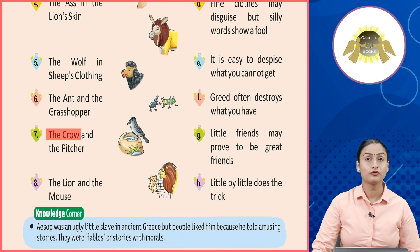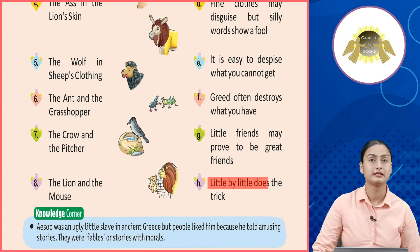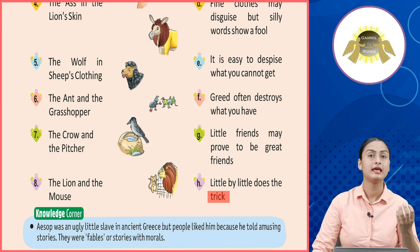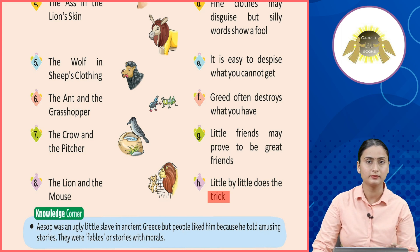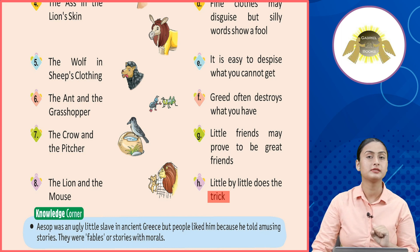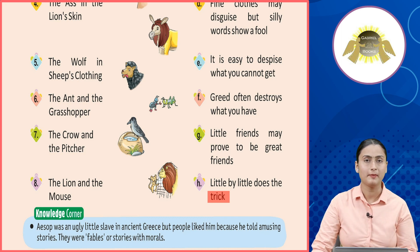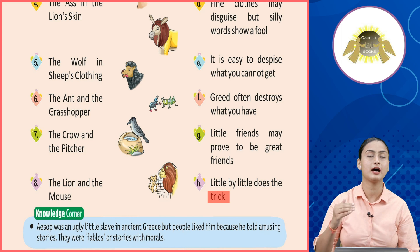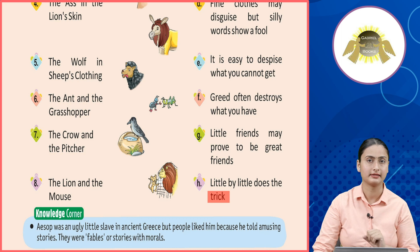Number seven: The Crow and the Pitcher. Isse hume seekhne ko milta hai: Little by little does the trick. Yani ki isme ek kauwa tha jiske saamne ek ghara tha jismein paani kam tha. Kauwe ko pyaas lagi thi lekin samajh nahi aa raha tha ki usme se paani nikale kaise. Toh usne dhire dhire ek ek kankar usmein daala aur paani ka level badhaaya aur apni pyaas bujhaai. Isse hume seekhne ko milta hai ki step by step, dhire dhire har ek process follow karte karte koi bhi kaam hum aaraam se achieve kar sakte hain.